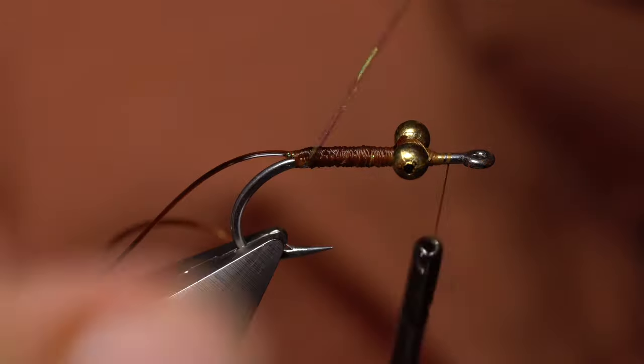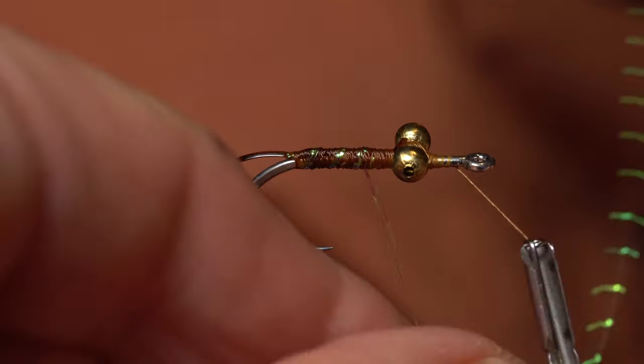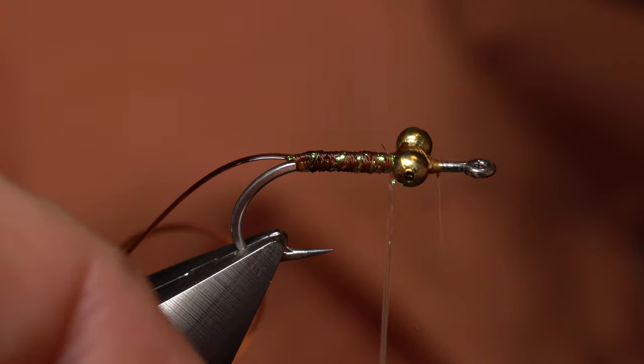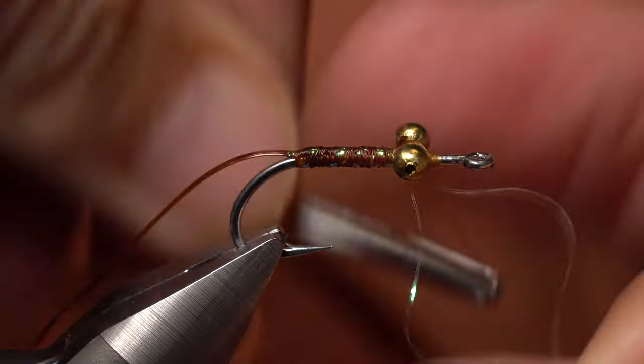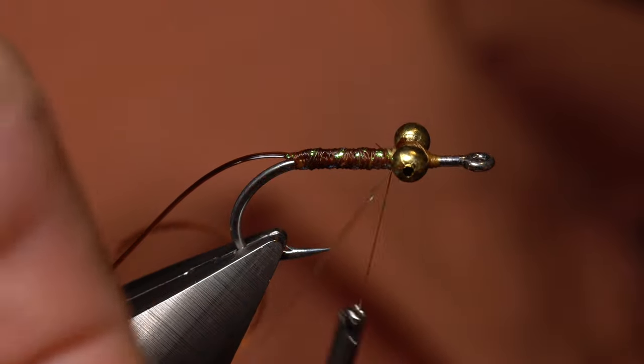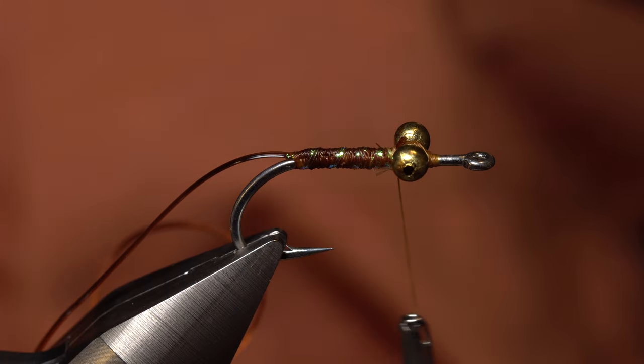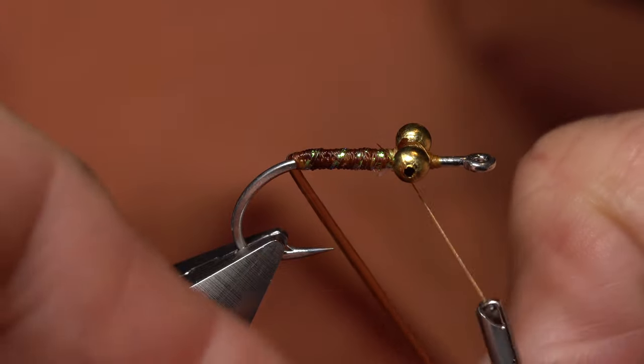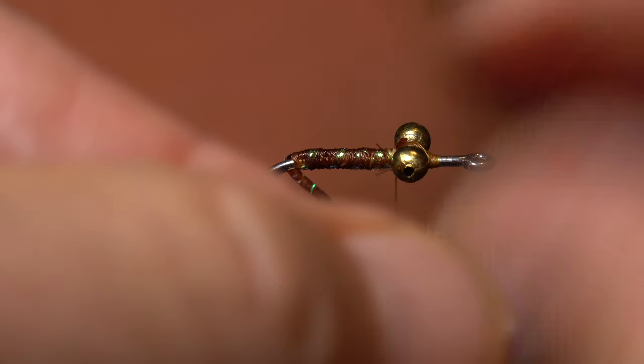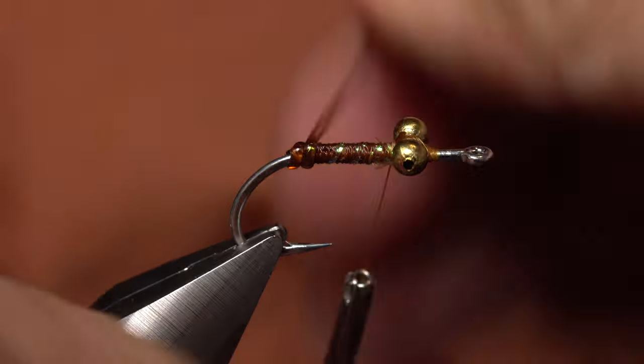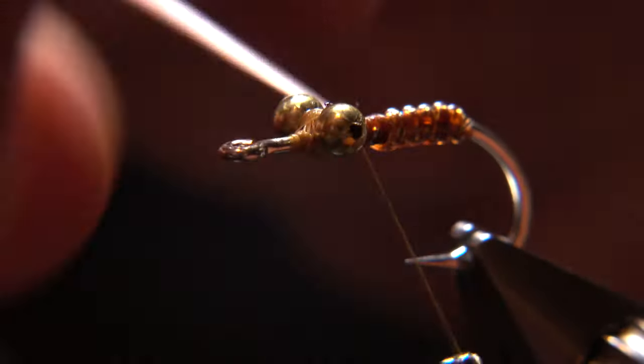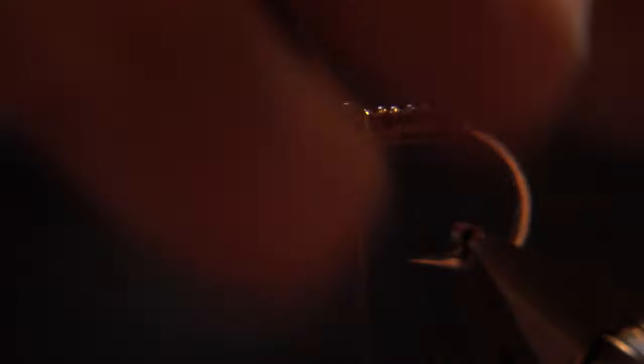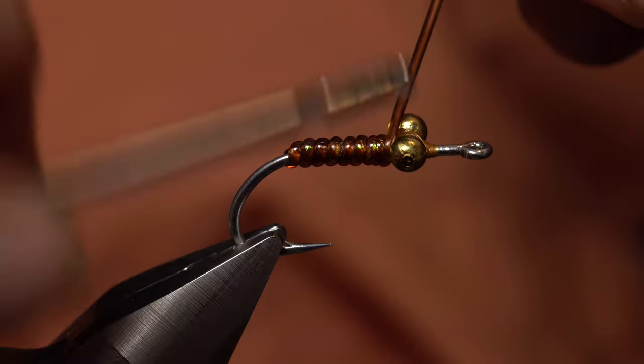Start making randomly spaced open spiral wraps with the strands of crystal flash. When you reach the eyes, unwind your tying thread and use it to secure the crystal flash really well. Next, get hold of the D-rib, and making sure the flat part of the rib contacts the underbody of the fly, start taking touching wraps with it to create the fly's shell. You should notice that the crystal flash has helped to make a nice shimmery but subtle mottled appearance to the body.